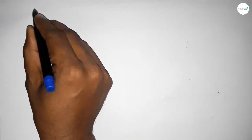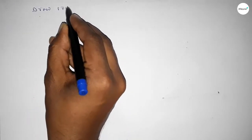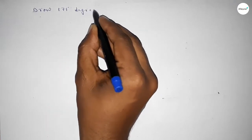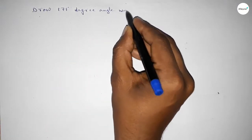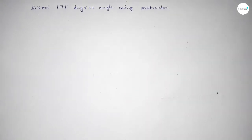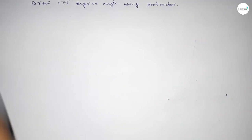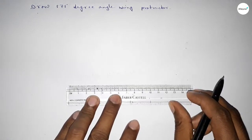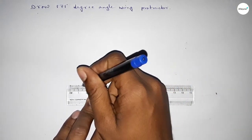Hi everyone, welcome to SI Share Classes. Today in this video we have to draw a 171 degree angle by using a protractor. So let's start the video. First of all, we have to draw here a straight line of any length.